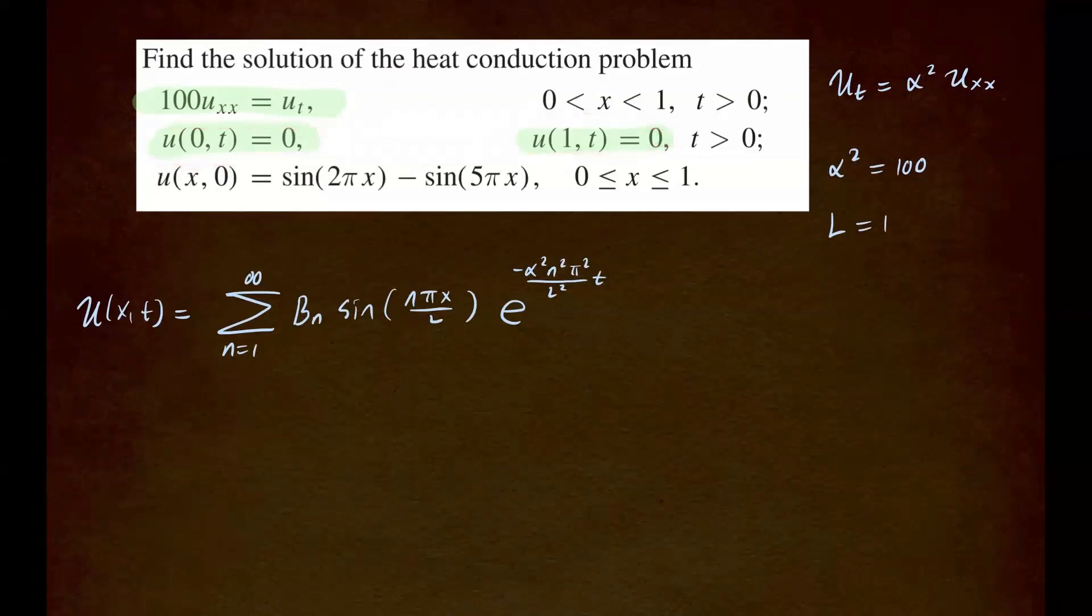Now, we can plug in our l value and alpha square. So we can plug these in into our solution. So by subbing those in, we have our solution that looks like the sum starting from 1 to infinity b sub n sine of n pi x since l is 1 times e to the—alpha square is 100—so this is negative 100 times n square pi square times t.